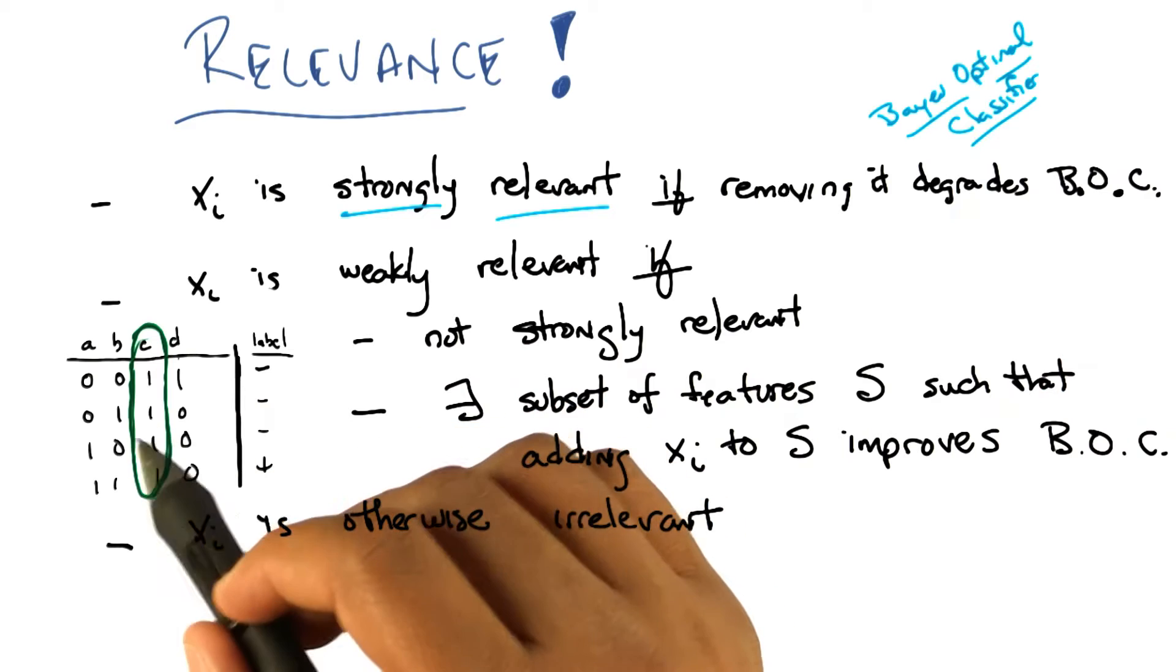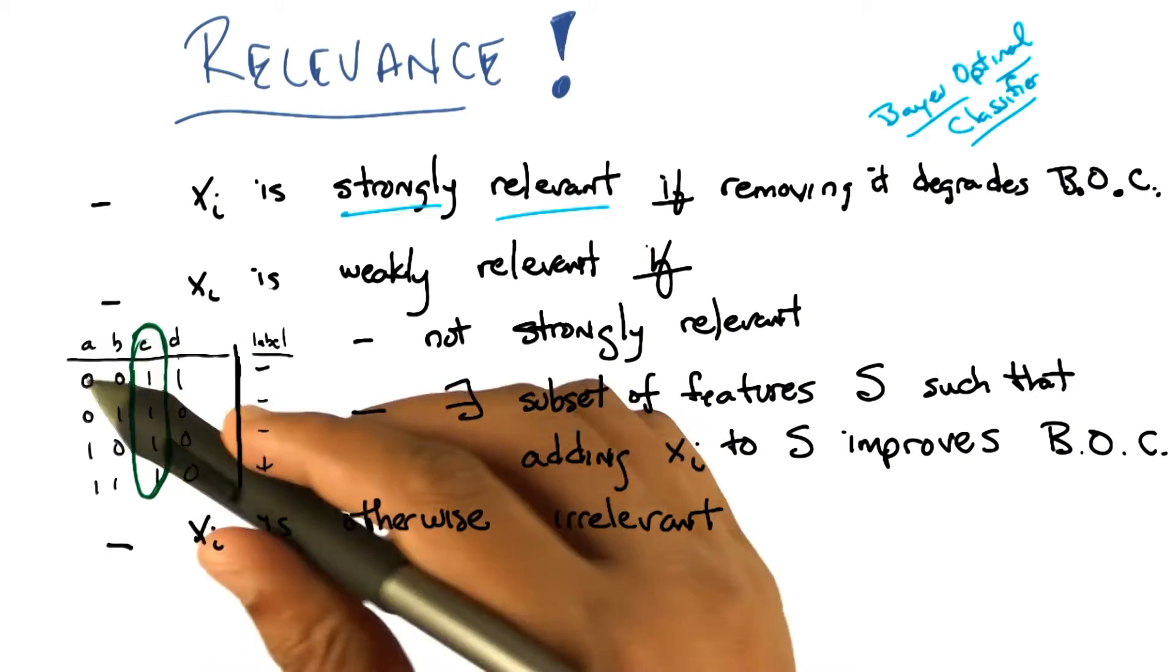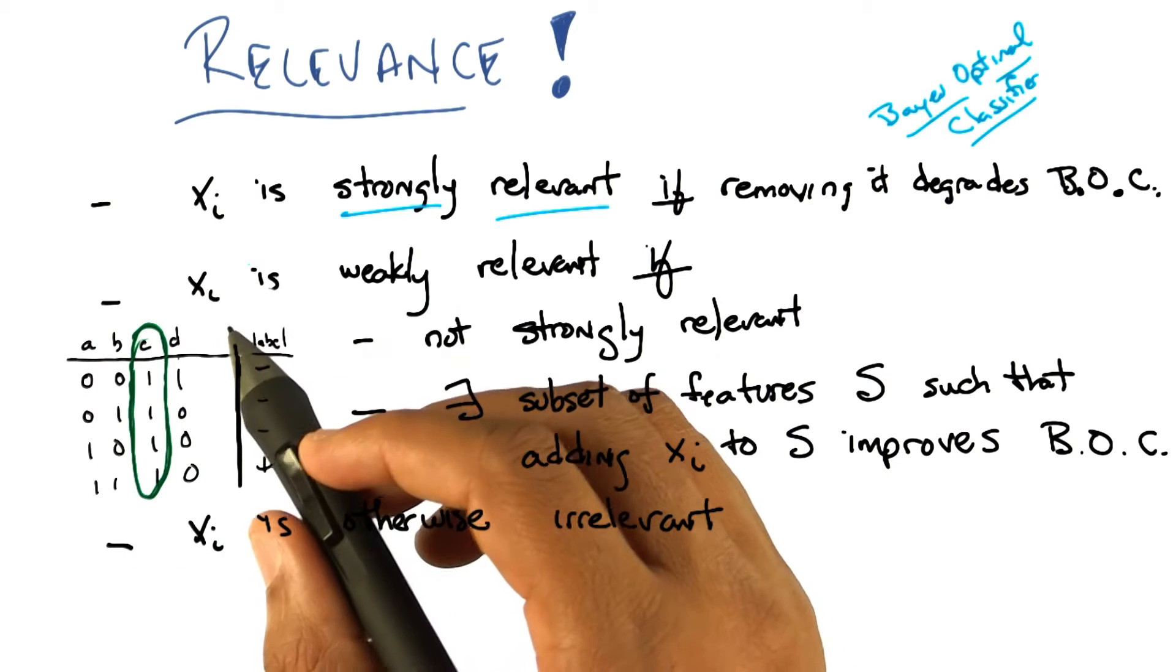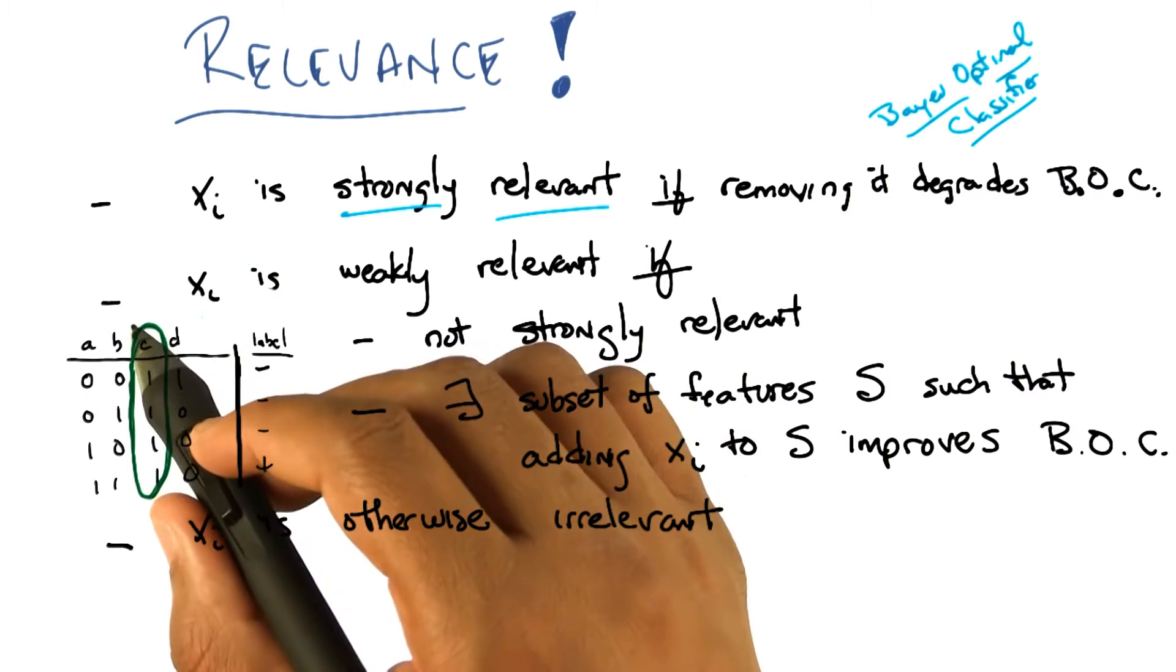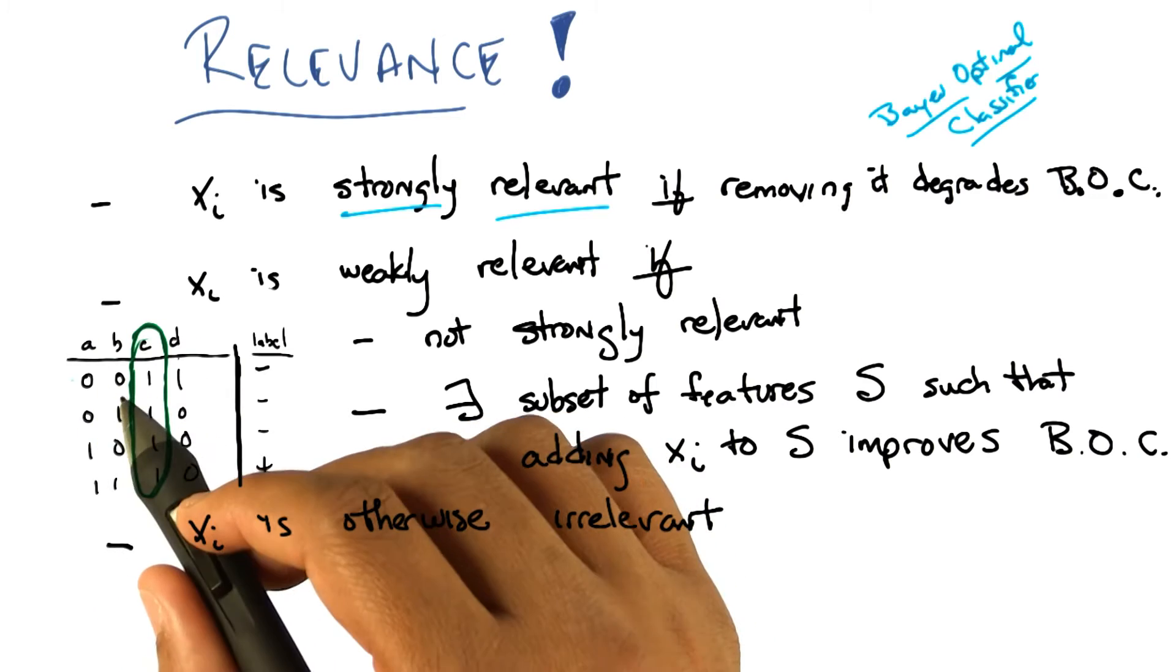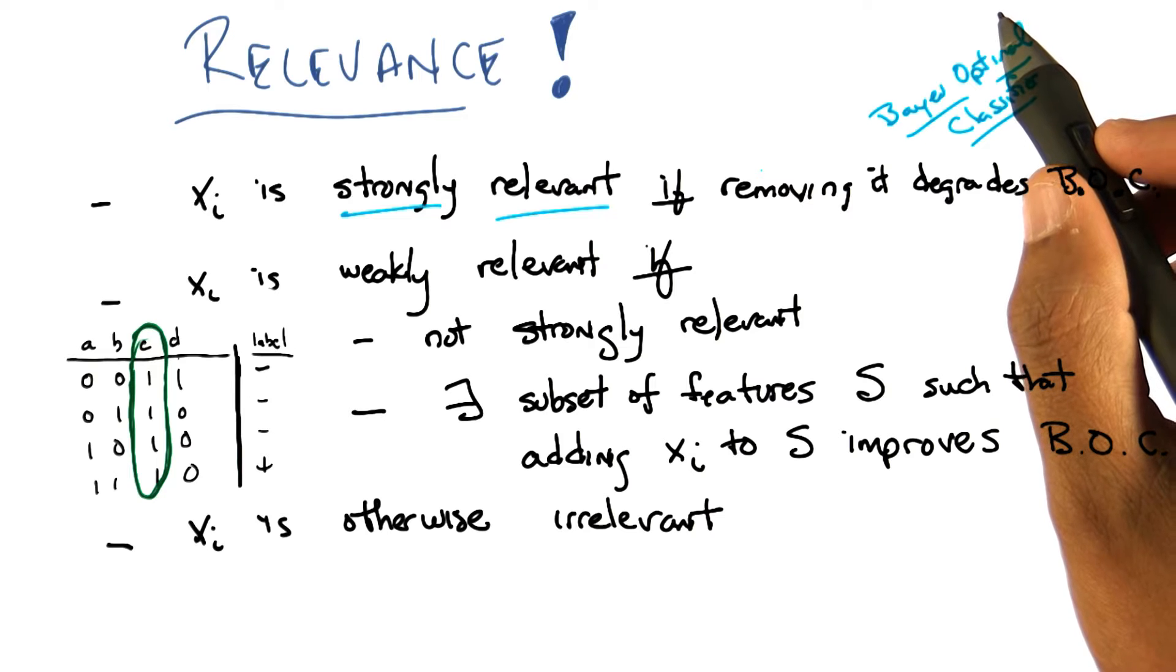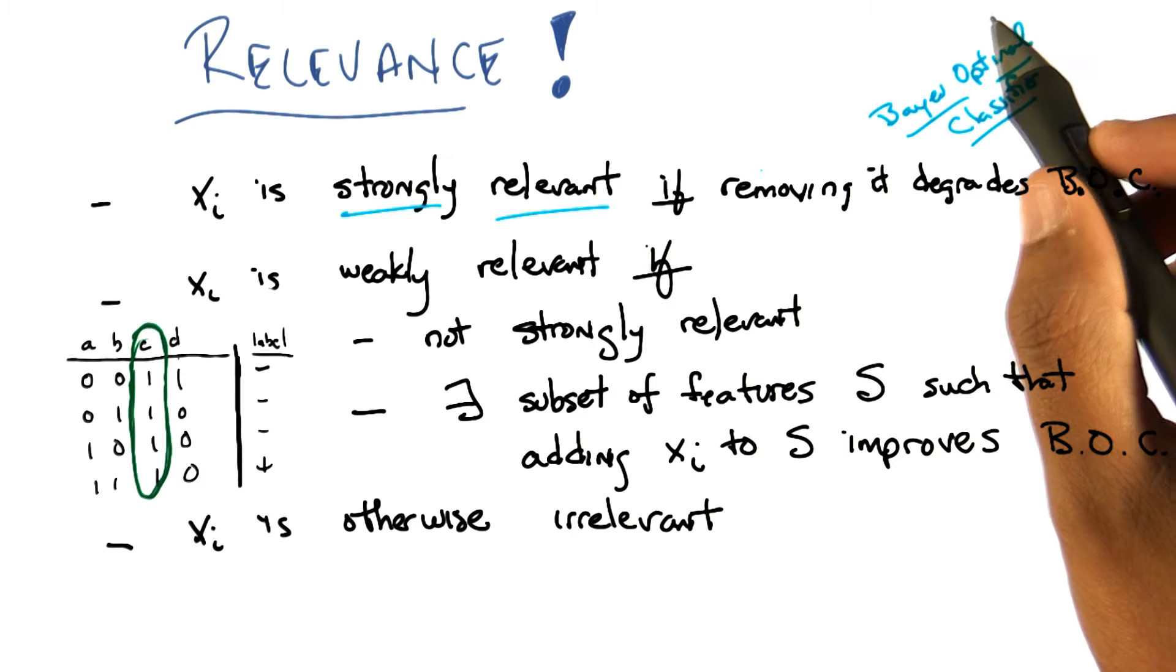In the quiz that we did before, we know that the actual function we were looking for really was A and B. So if I remove A, I can't actually compute A and B. Similarly, if I remove B, I can't actually compute A and B, so both A and B are strongly relevant. I mean, in this case it uses the fact that not only that it is A and B, but there is nothing else that has the same information as A and the same information as B.